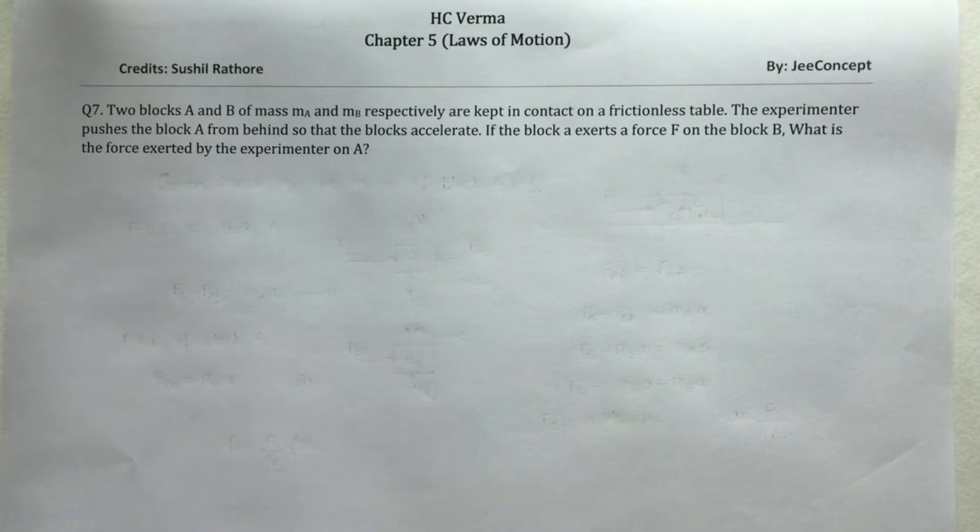The problem statement says two blocks A and B of mass MA and MB respectively are kept in contact on a frictionless table. The experimenter pushes the block A from behind so that blocks accelerate. If the block A exerts a force F on the block B, what is the force exerted by the experimenter on A?